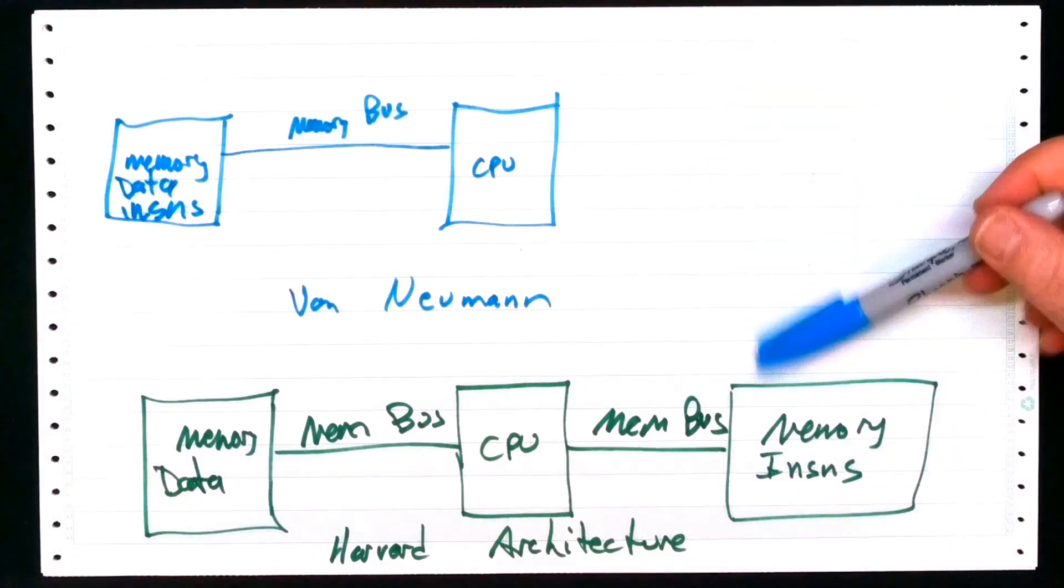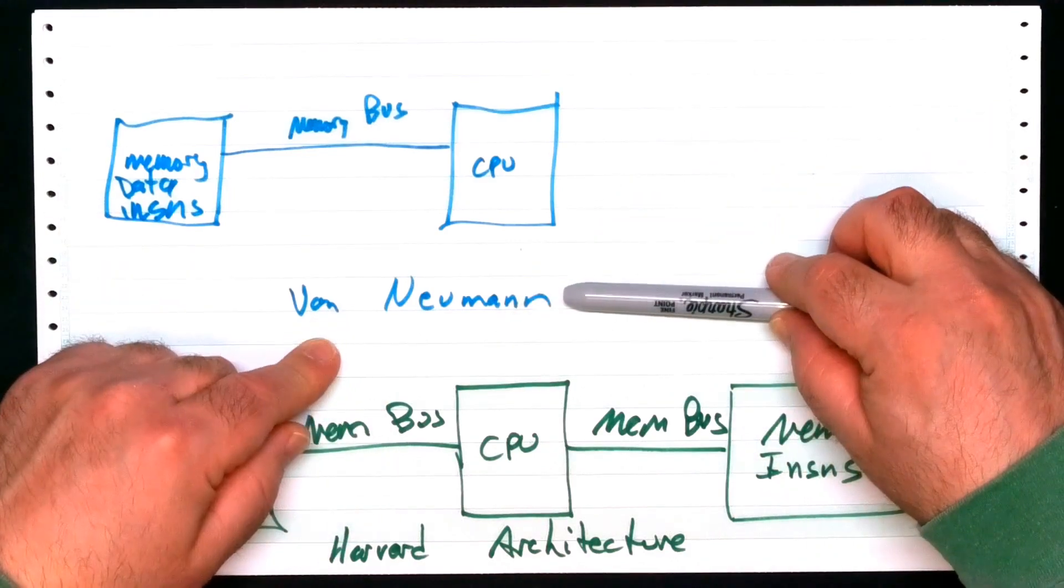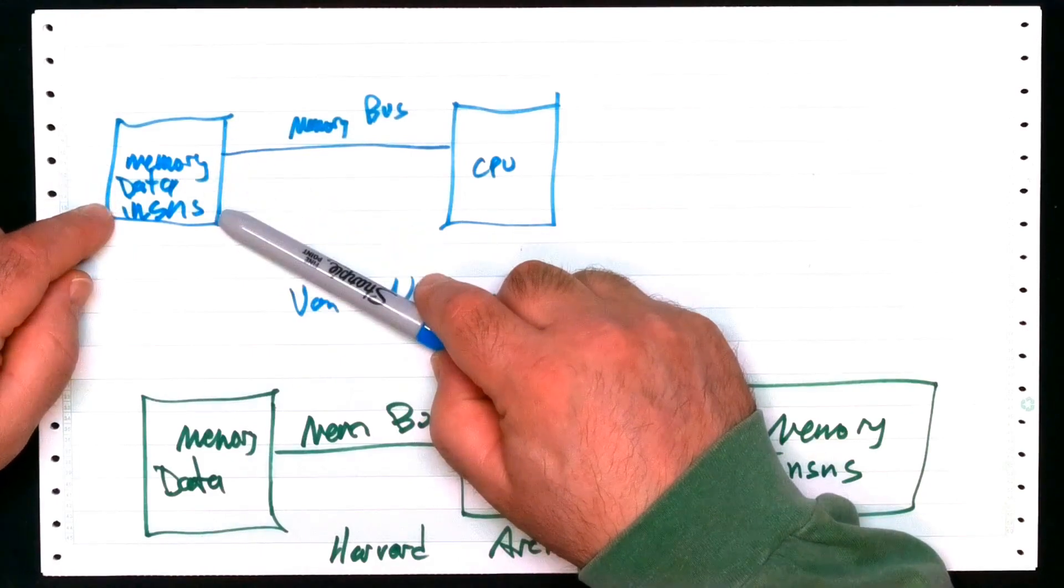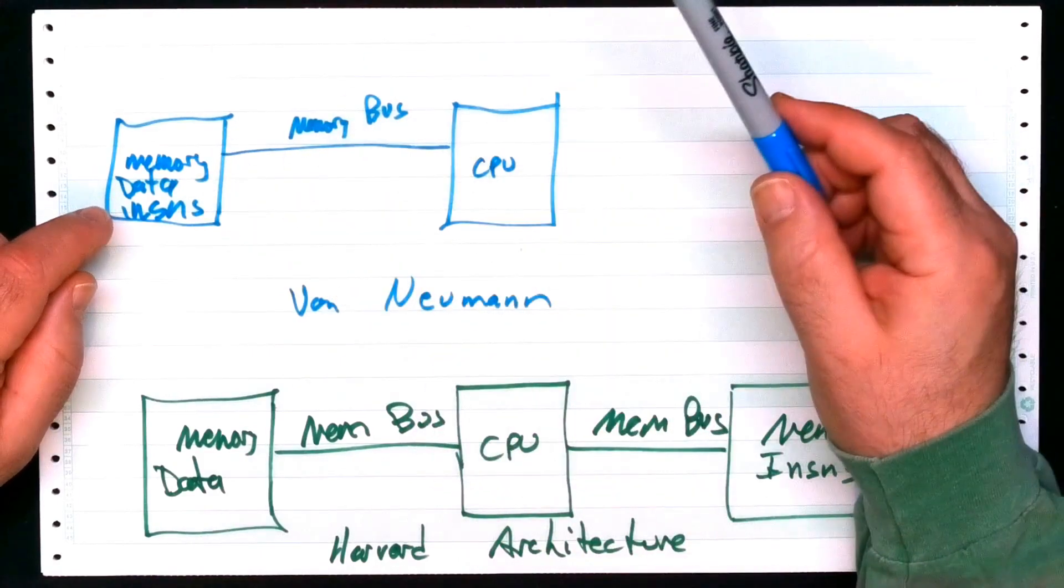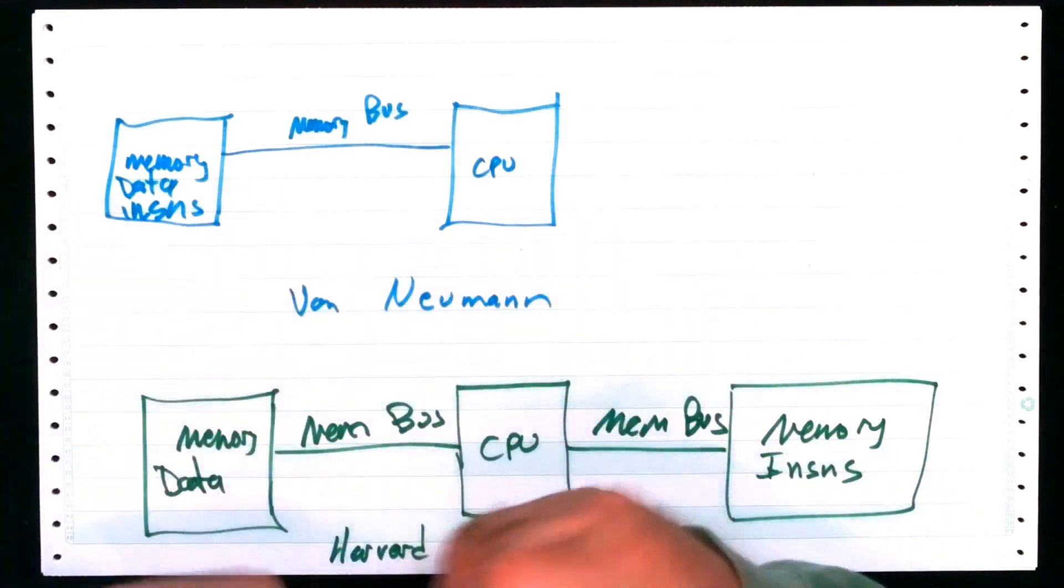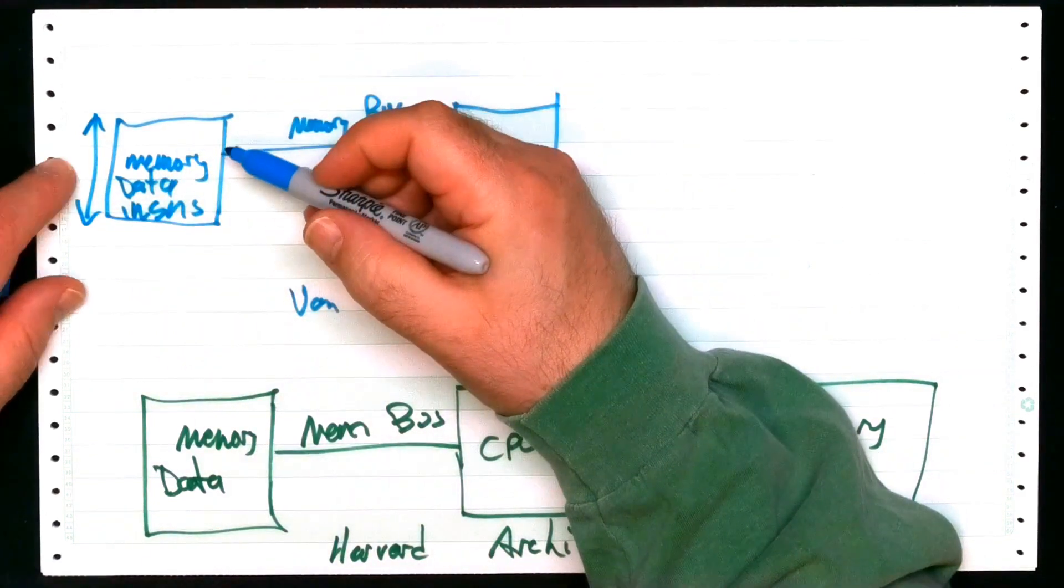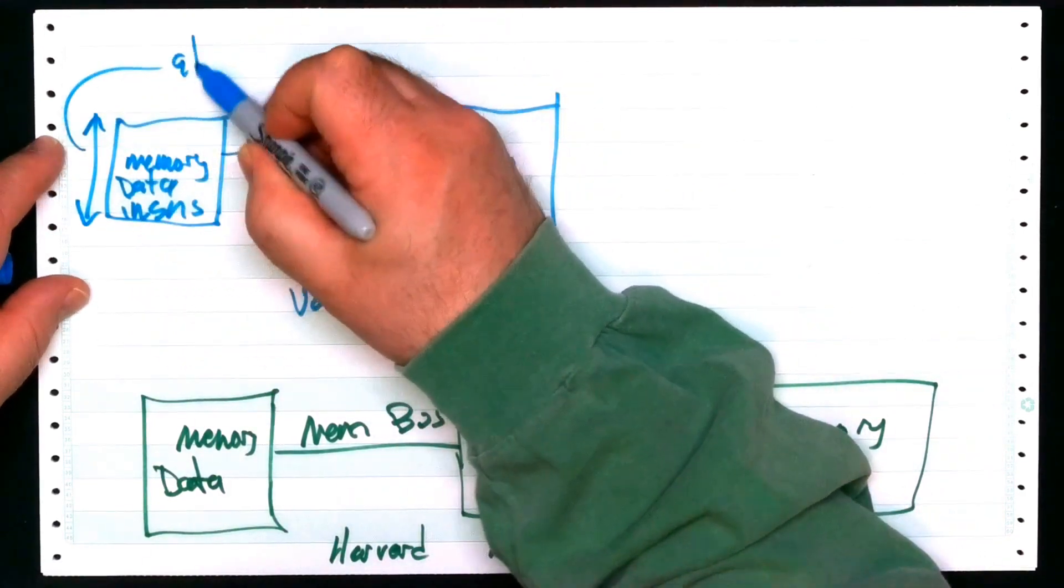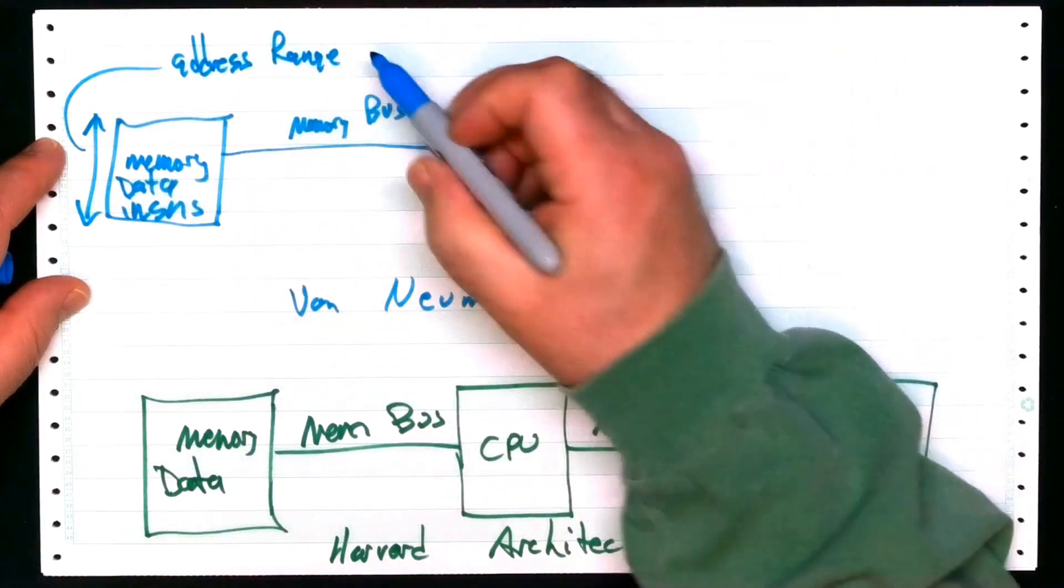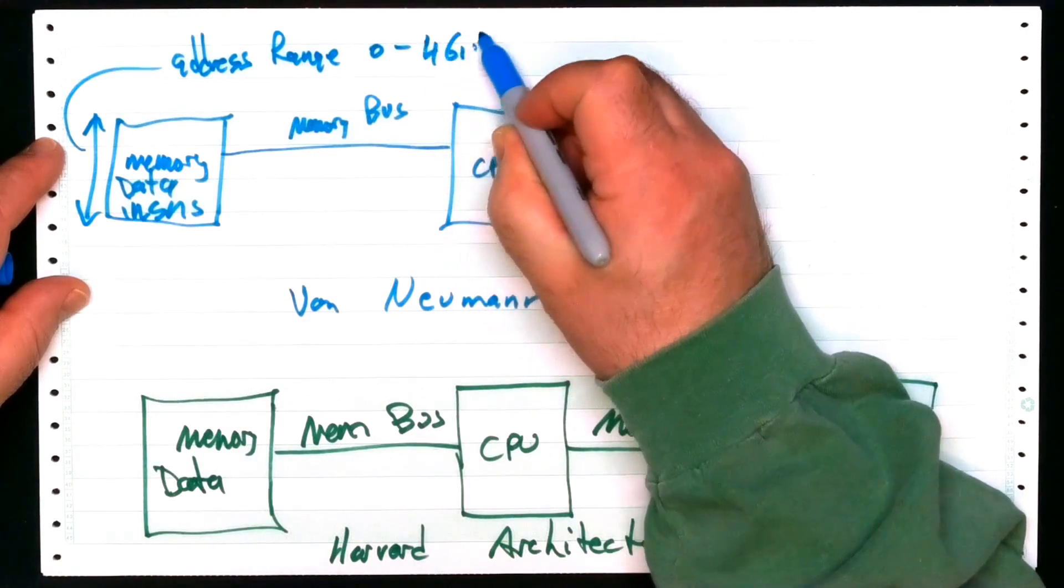Now, what are the implications of all this? That's the point. Von Neumann, one CPU, one memory, everything's in this memory. That means that the address range here, or the address range, the address range, maybe it's zero through four gig or something like that.